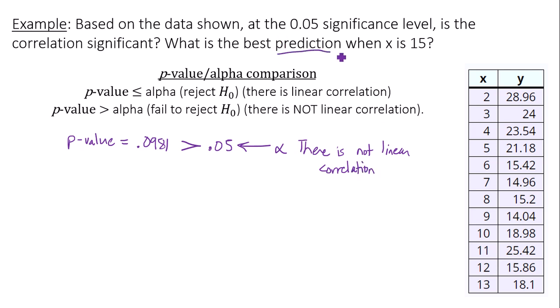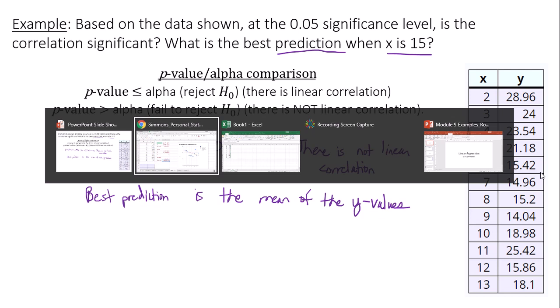So there is not linear correlation in this case, which means to make a prediction, I cannot use the linear regression equation. Instead, the best prediction is the mean of the Y values. That's the protocol that's done here. You can either add up all the Y values and divide by how many you have, or you can utilize Google Sheets.